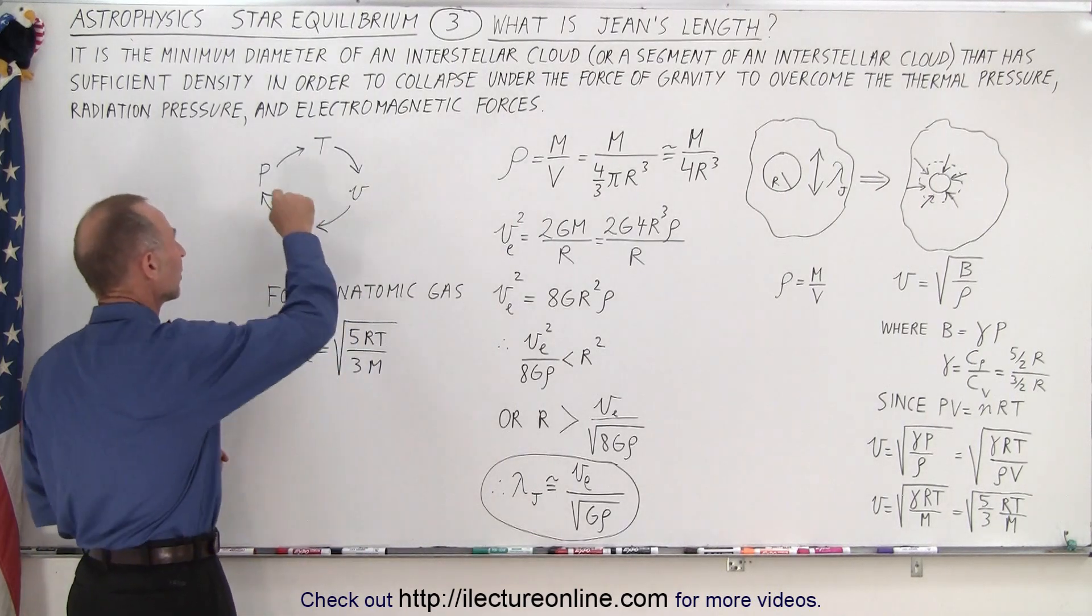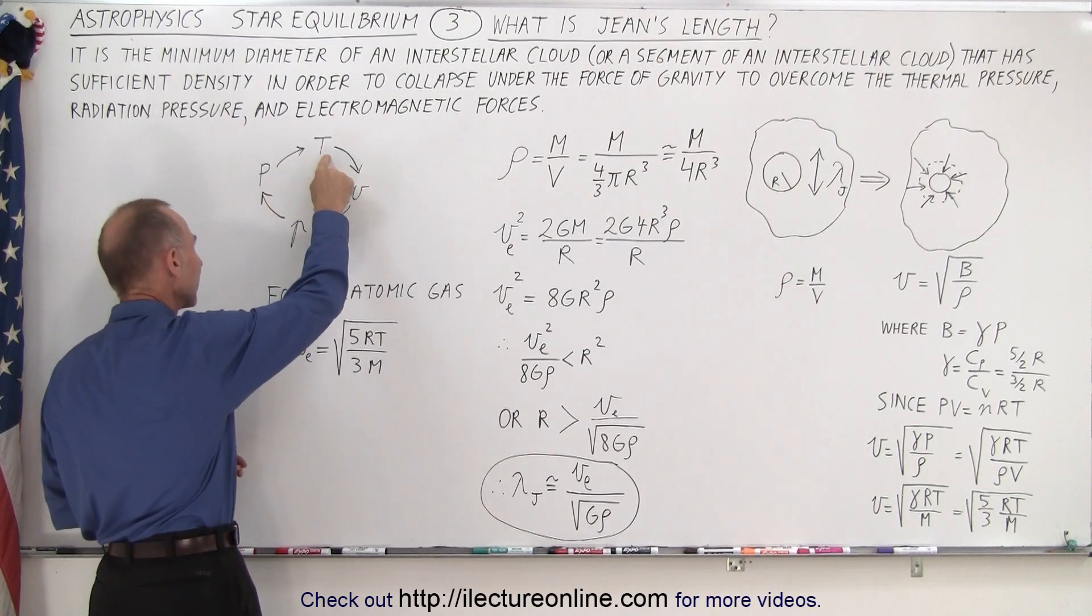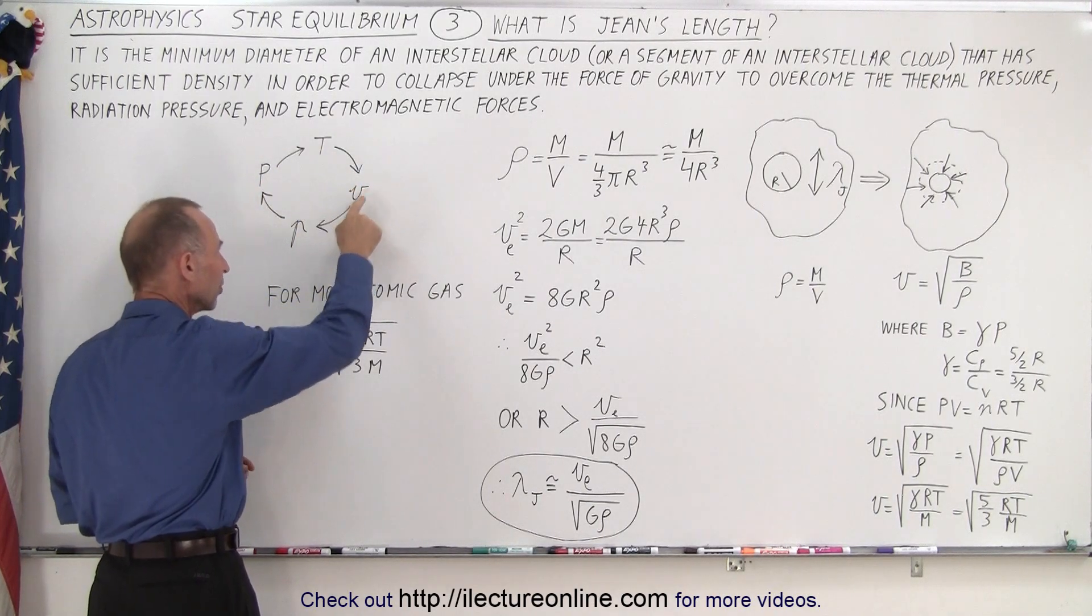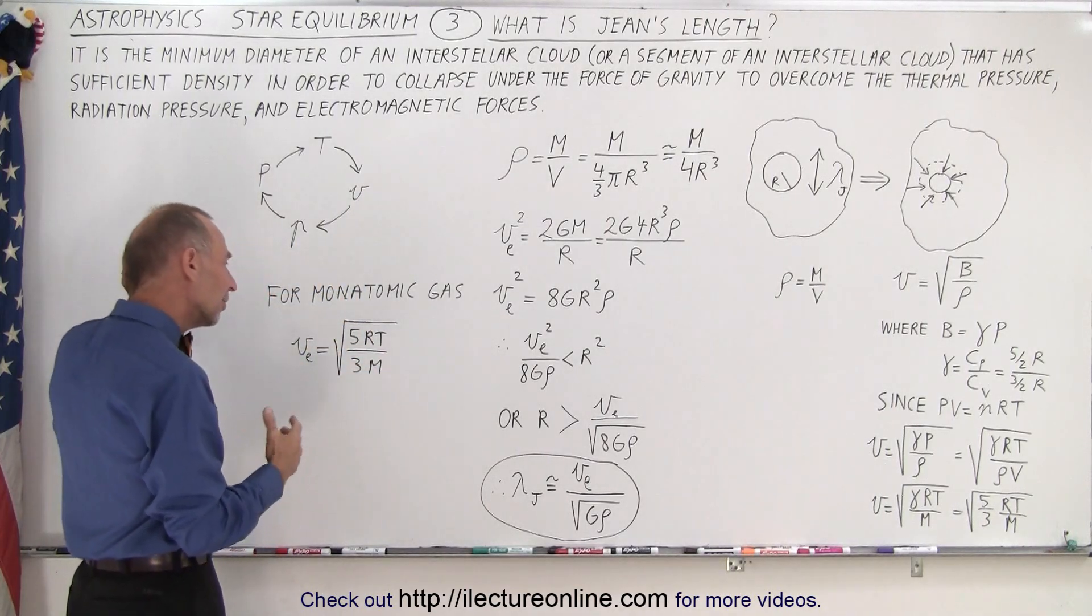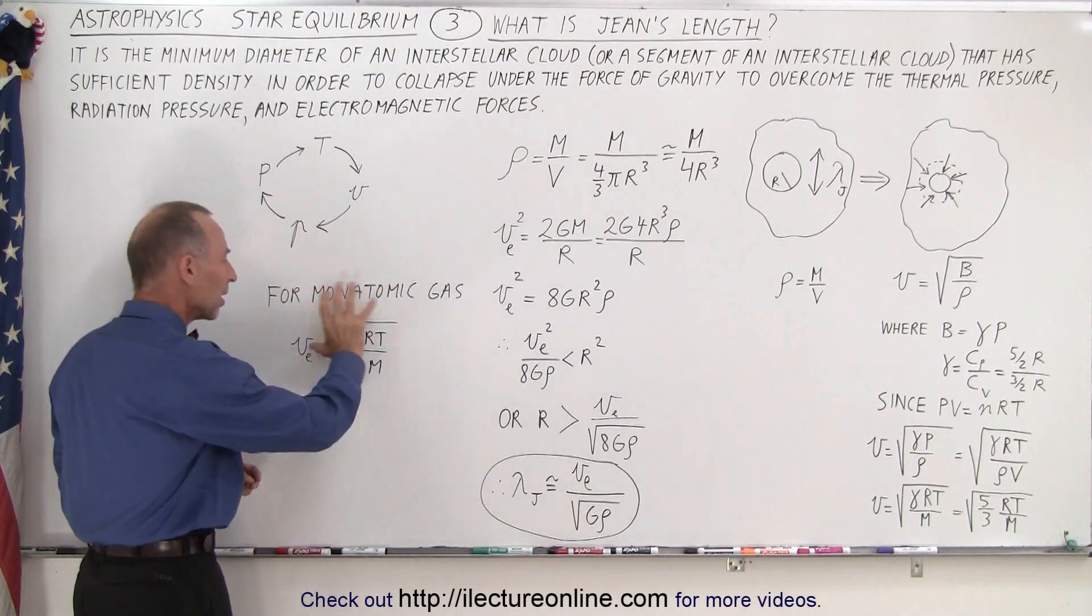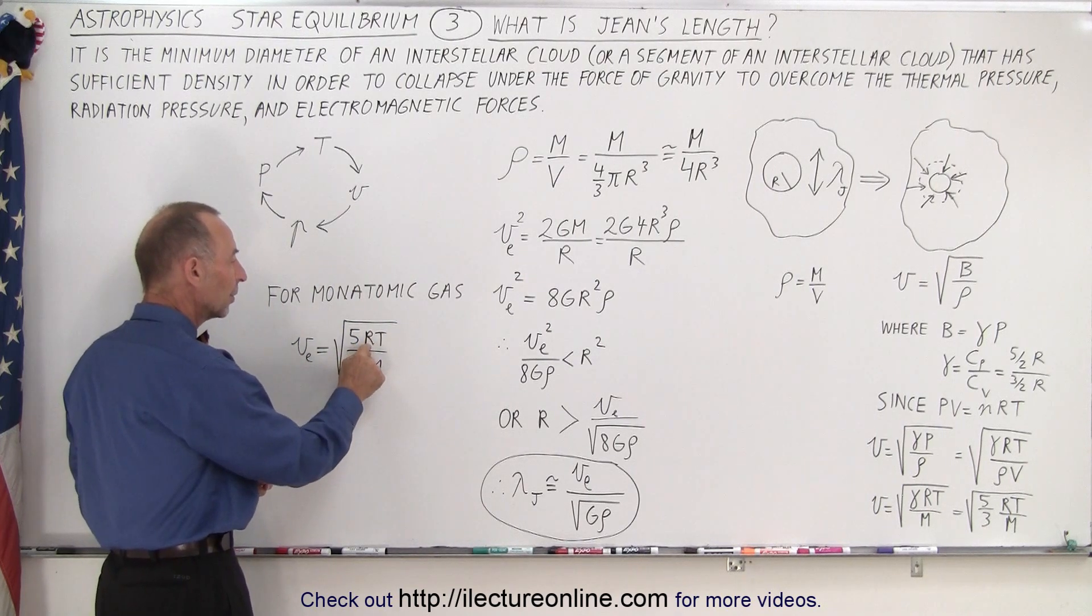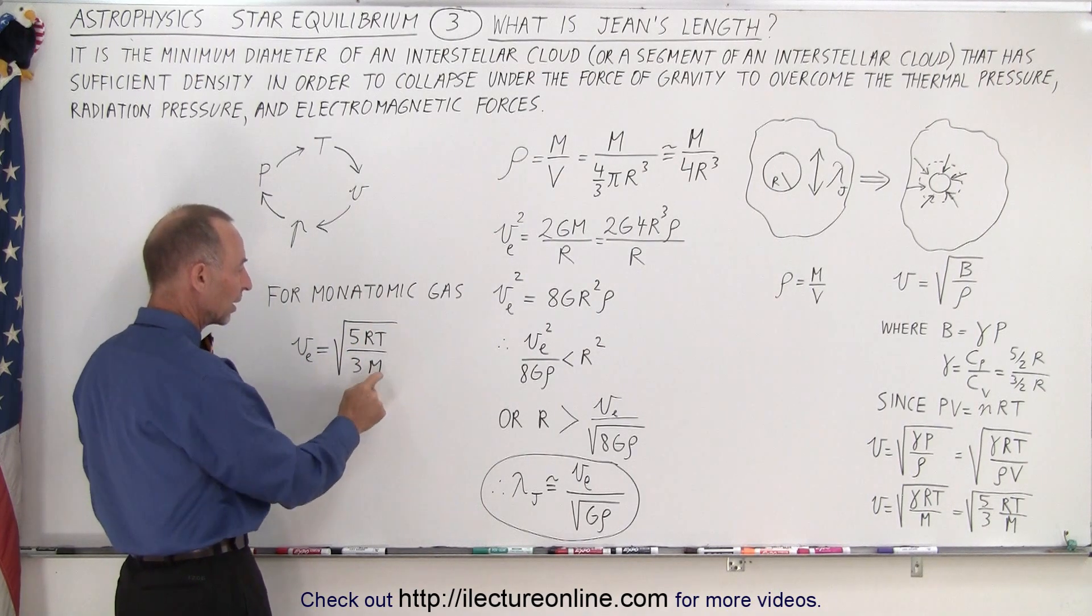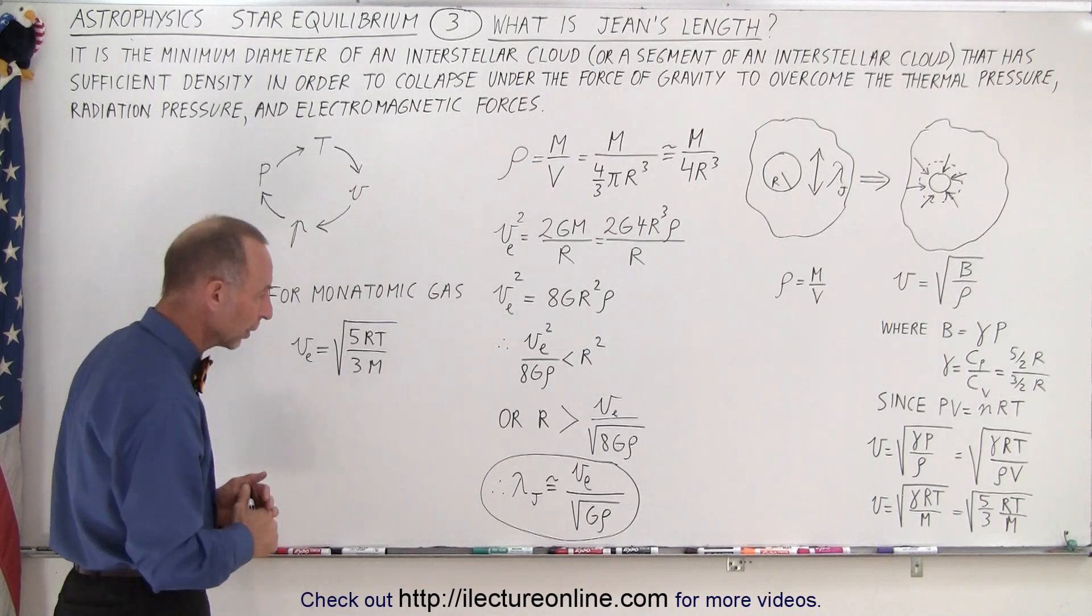But we have to remember that the pressure inside the gas is dependent on the temperature, which then causes a certain velocity which causes a certain amount of momentum of the molecules in there. And so we then have to remember that for monatomic gas, the escape velocity is going to be approximately equal to 5/3 RT over M, R being the gas constant, T being the temperature in Kelvin, and M being the molar mass. Remember this was a per mole thing.